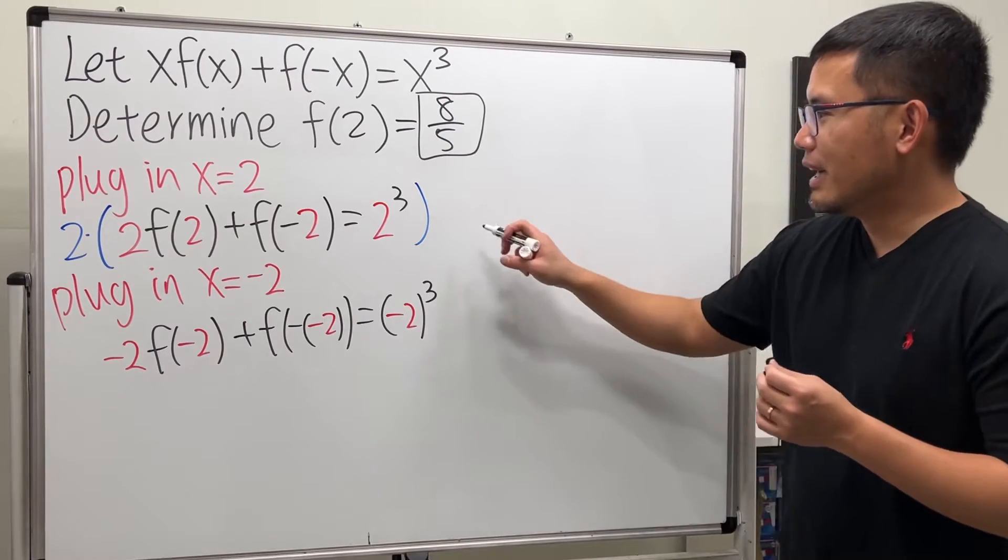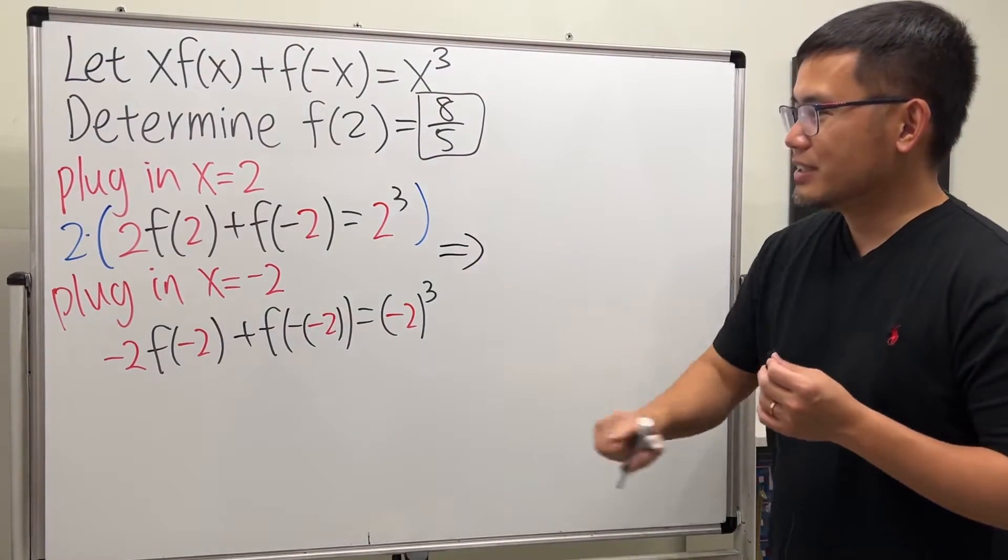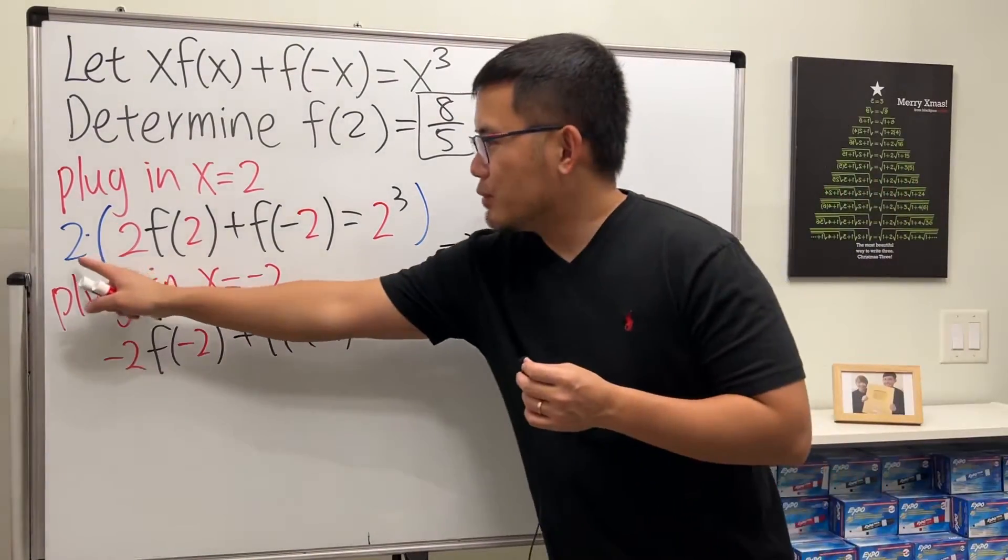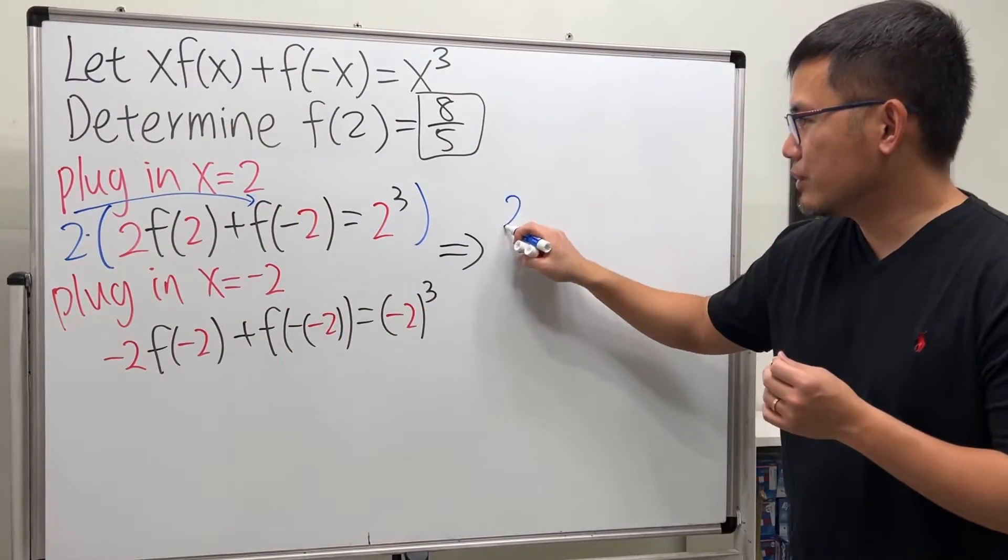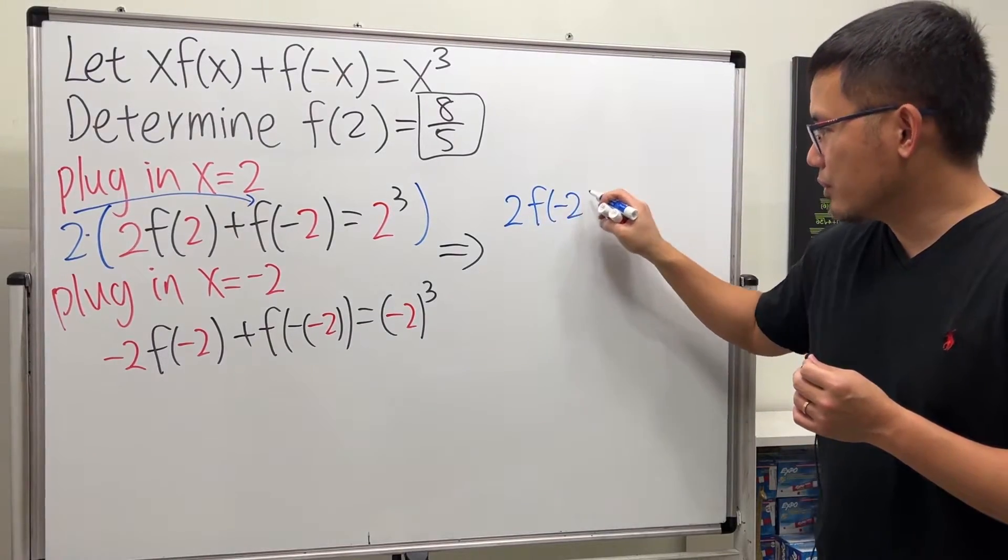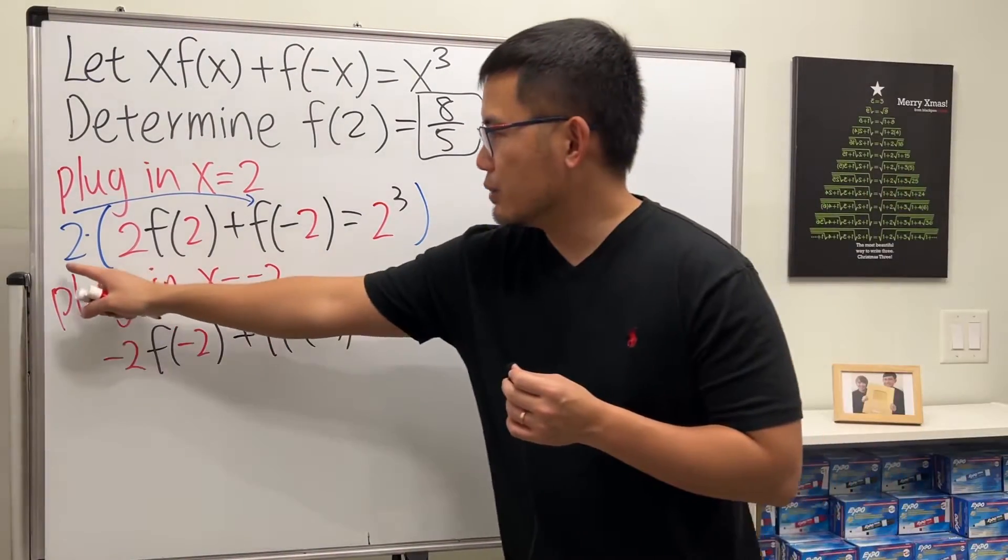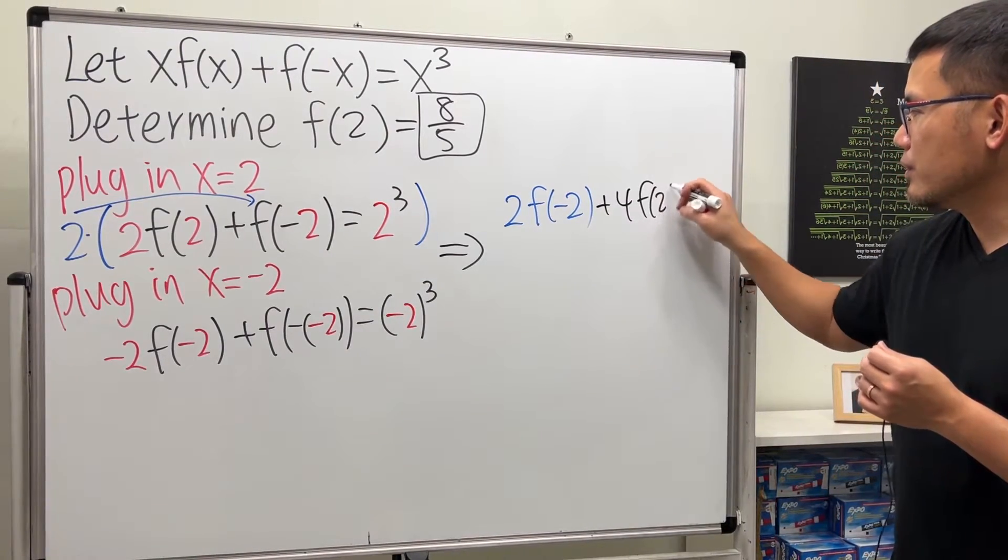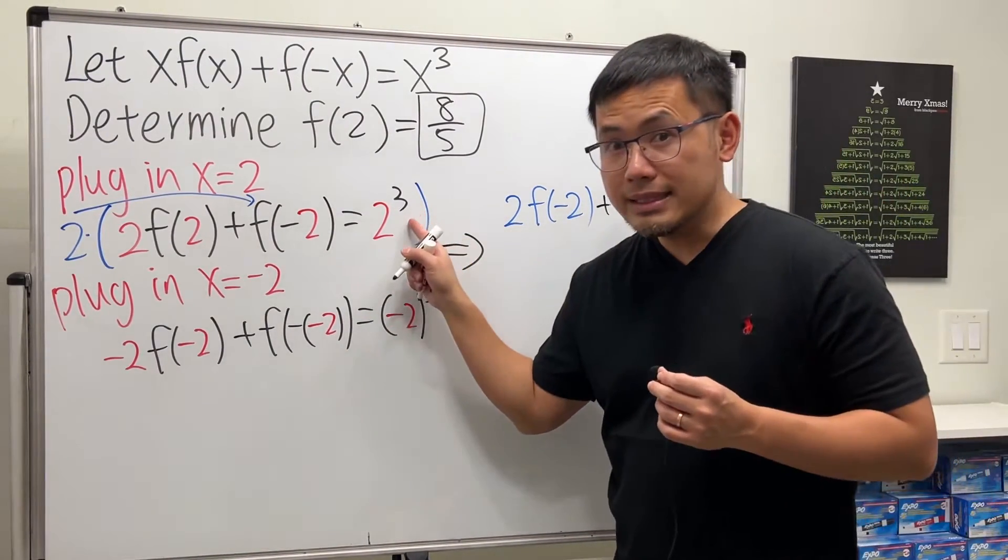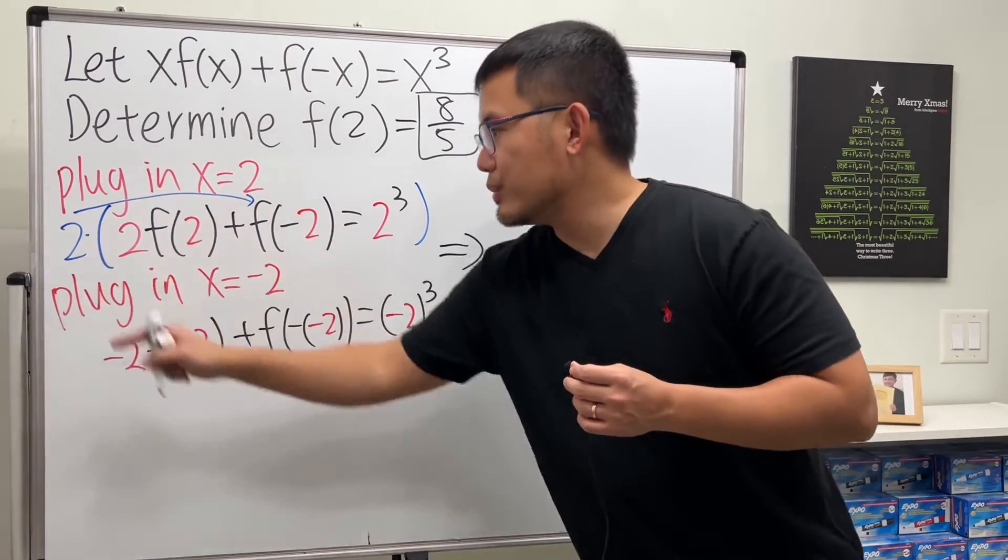This equation has so many tools. Check this out, let me write this down first. So I will take this and multiply by that, so I will have 2f(-2) and then do the rest. We get 2f(-2) + 4f(2) = 16.